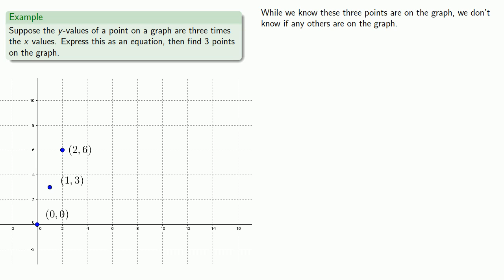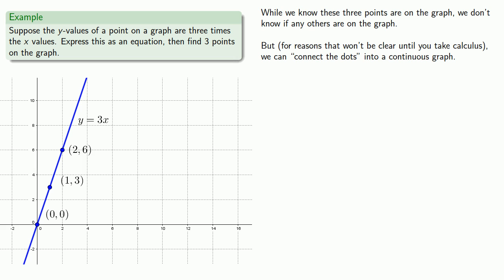Now, while we know these three points are on the graph, we don't know if there are any others on the graph, and we could find more by choosing different values of x. And if I were endlessly patient, I could fill in the space between these points with many, many, many more points. But for reasons that won't be clear until you take calculus, we can connect the dots to form a continuous graph. Mathematicians say that the equation y equals 3x corresponds to the curve shown. And it's important to recognize two things. First, mathematicians are not very good at coming up with new and exciting names for things. This is a curve and there's no real need to call it anything else. And when a mathematician talks about curves, they include things like this straight line.